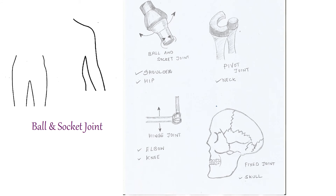Now, stand up. Keep your left hand on your right shoulder and try rotating your right arm. You can feel the movement at your right shoulder. This joint is called a ball and socket joint. We have a ball and socket joint at our hip area as well.